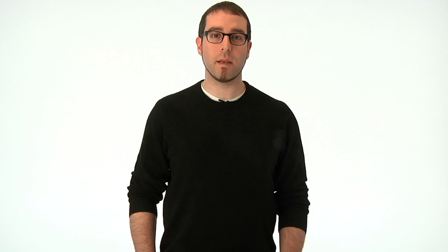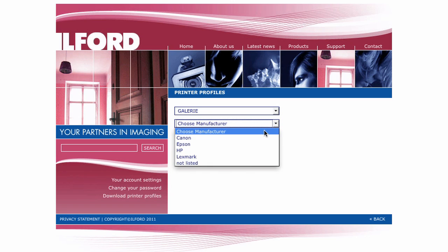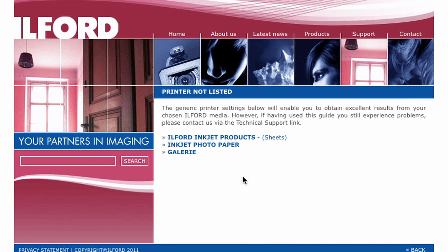You'll notice on most of these drop down menus that the option not listed is available. This is in that rare situation where your printer is not an option. This will take you to a screen that looks like this. Where the great people at Ilford will walk you through using some of the generic printer settings to try and get the best out of your printer with your Ilford Gallery inkjet paper.